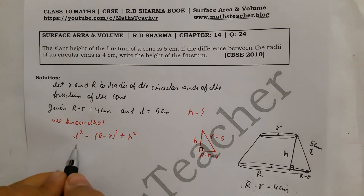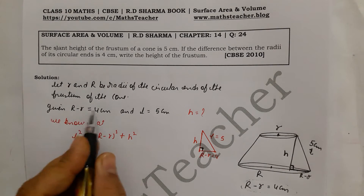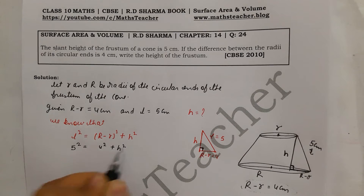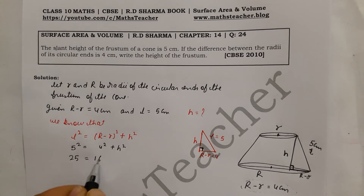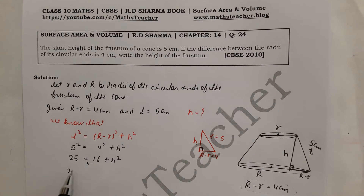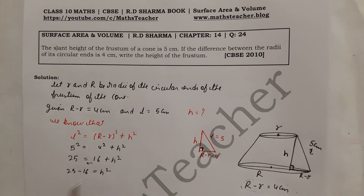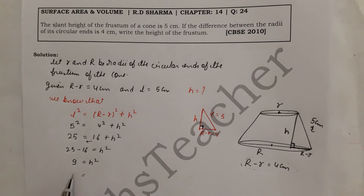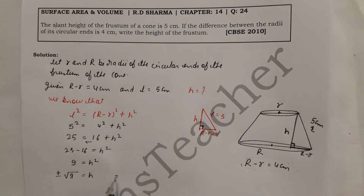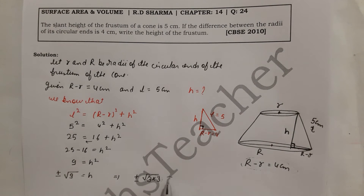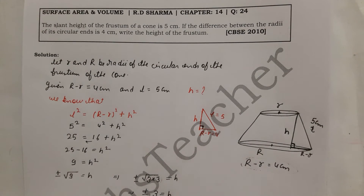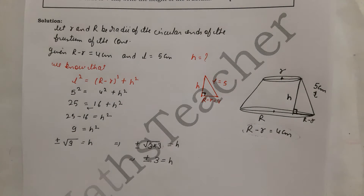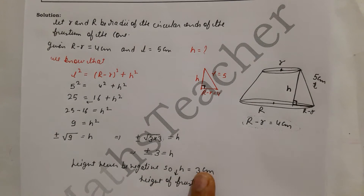Putting in the values: L = 5, so 5² = H² + (R - r)². R - r = 4, so 4² = 16. Therefore 25 = H² + 16. Transferring: H² = 25 - 16 = 9. Taking the square root: H = ±3. Since height cannot be negative, H = 3 cm. The height of the frustum is 3 cm.